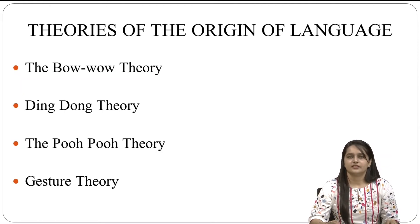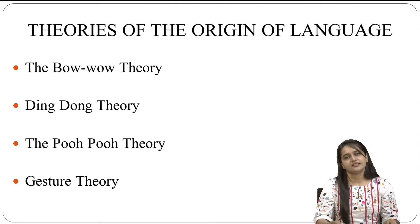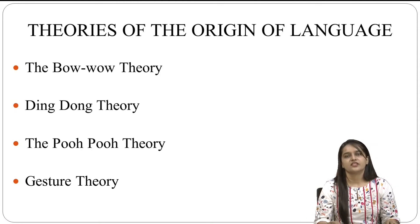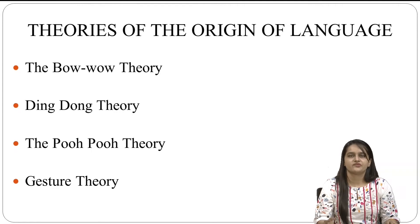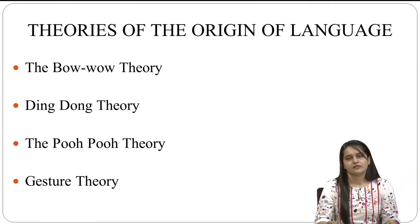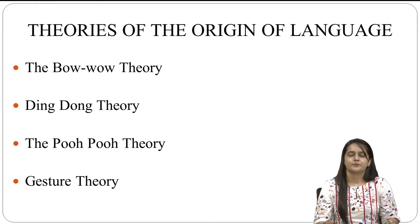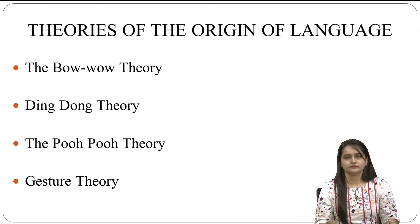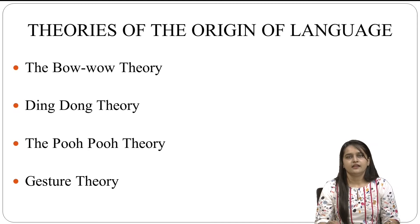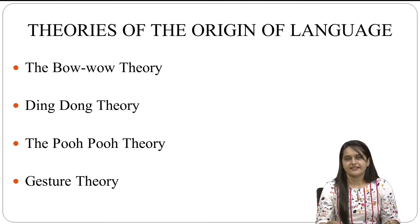The third is the Poopoo theory. This theory seeks the origin of language in such involuntary exclamations of pain, surprise, wonder, disapproval, pleasure — for example, 'O', 'Ba', and such like that. As a theory of origin of language, it stands upon a very slippery ground.